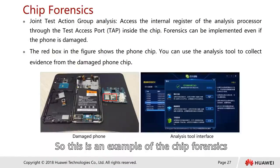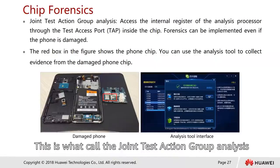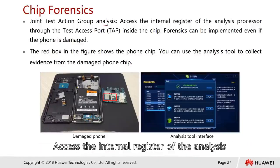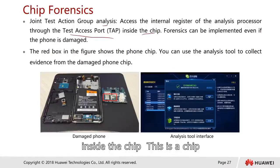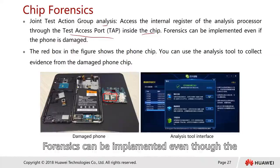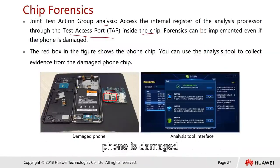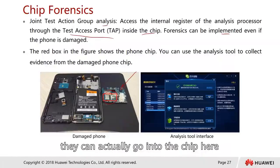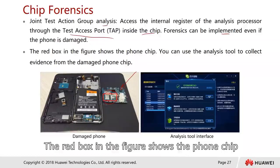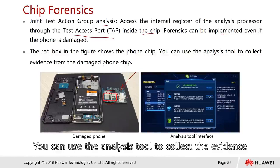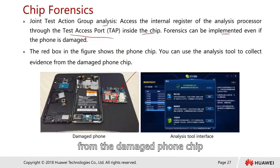Chip forensics: this is called Joint Test Action Group (JTAG) analysis. It accesses the internal registers of the processor through the Test Access Port (TAP) inside the chip. Chip forensics can be implemented even though the phone is damaged — they can go in through the chip to try to recover information. The red box in the figure shows the phone chips, where analysis tools are used to collect evidence from a damaged phone chip.